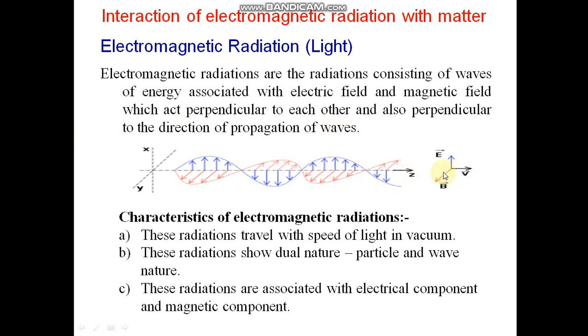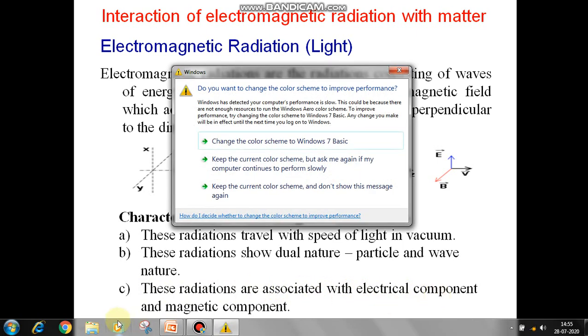See here, this is the direction of propagation, this is electric field, this is magnetic field and these are perpendicular to each other. Characteristics of Electromagnetic Radiation: These radiations travel with speed of light in vacuum. These radiations show dual nature, particle and wave nature. These radiations are associated with electric component and magnetic component.